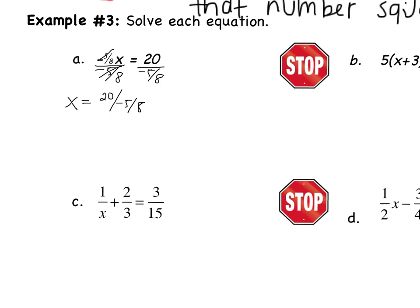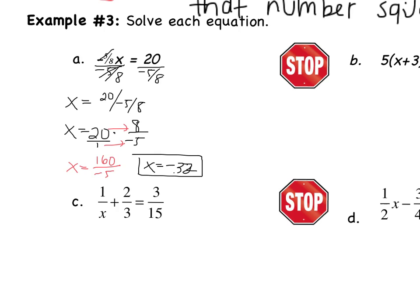Remember, dividing by a fraction is the same as multiplying by the reciprocal. So this becomes 20 times 8 over negative 5. Writing 20 as 20 over 1, I multiply numerators and denominators: 20 times 8 equals 160, and 1 times negative 5 equals negative 5. So x equals 160 over negative 5. Since 160 divided by 10 is 16, and I'm dividing by negative 5 — half of 10 — I get x equals negative 32.